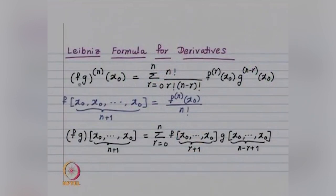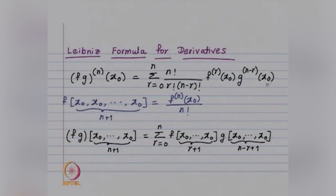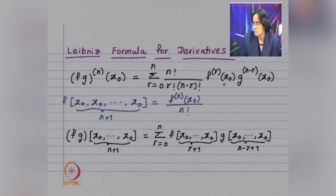The Leibniz formula for derivatives is given as follows: if you have two functions f and g which are n times differentiable, the n-th derivative of f·g at x₀ is given by the summation r from 0 to n of n!/(r!(n−r)!) times the r-th derivative of f at x₀ times the (n−r)-th derivative of g at x₀. So the derivative of f·g is given in terms of derivatives of f and g up to order n.